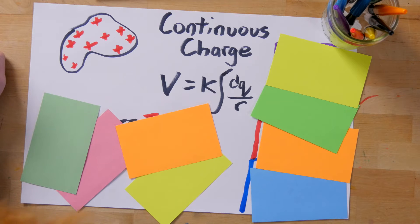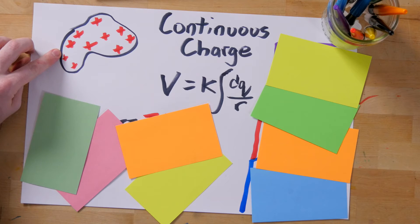Sometimes you won't be able to use the point charge equation for potential. Instead, you'll have an object that has charge spread all over it. In this case, if we want to calculate the potential, we want to think about how all the small amounts of charge on this object affect potential at a desired point.